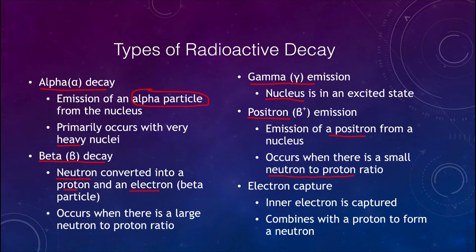Again, positron emission is trying to bring the nucleus towards that line of stability. And finally, electron capture is where an inner electron is captured by the nucleus and combines with a proton to form a neutron.